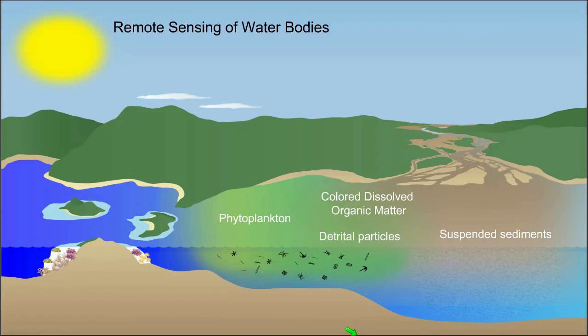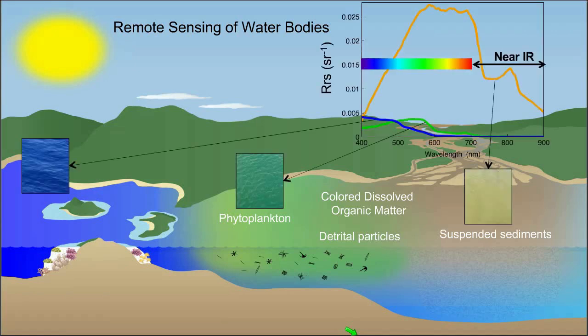Water bodies dominated by phytoplankton, colored dissolved organic matter, suspended sediments, or detrital particles have distinctive water colors that are detectable in the shape of their remote sensing reflective spectra. Note how when you look at each of these images of what the water color looks like to our eyes, those differences are also reflected in the shape and magnitude of the remote sensing reflective spectra for these different water types.